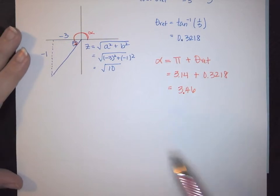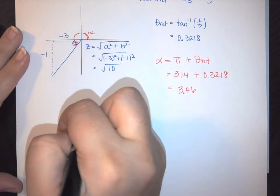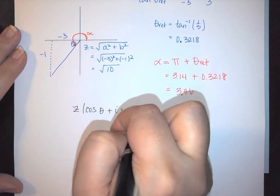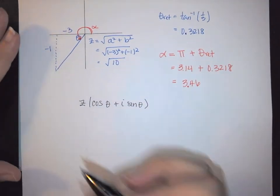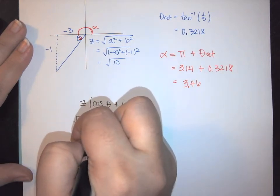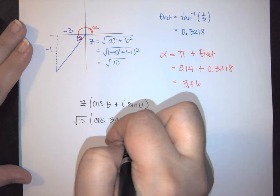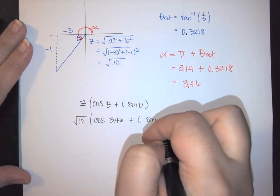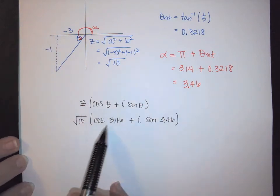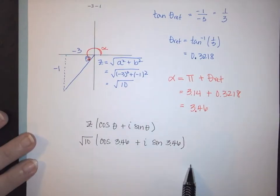Now we can fill out the rest of our information. We're still going to use z times the cosine of your angle plus i sine of your angle. Since all we want is trig form, we simply plug in: our answer is the square root of 10 times the cosine of 3.46 plus i sine of 3.46. Notice we've rounded to the hundredths place, which was what our directions said, and we are in our proper form.